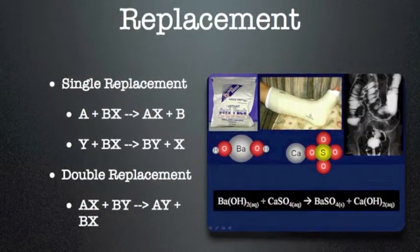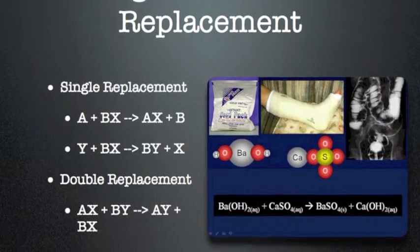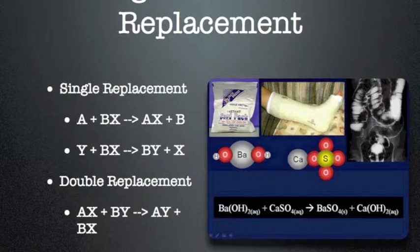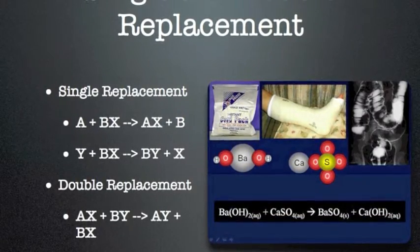The next type of reaction is a single replacement reaction, where a single element is mixed with a compound, and that single element then bumps out one of the other elements in the compound to make a new compound.